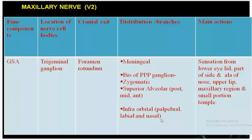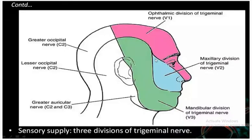The maxillary nerve carries sensation from the lower eyelid, part of the side and ala of the nose, upper lip, maxillary region, and the temporal region.